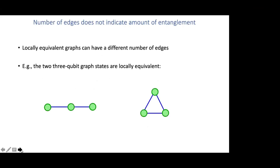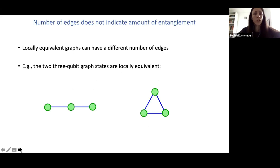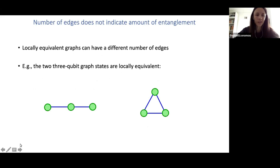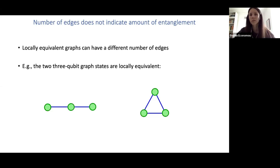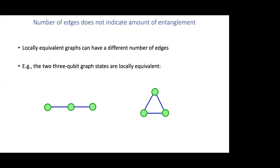There was a quick question in the chat: is any quantum state locally equivalent to a graph state? No. The number of states that can be expressed as graph states is very small.